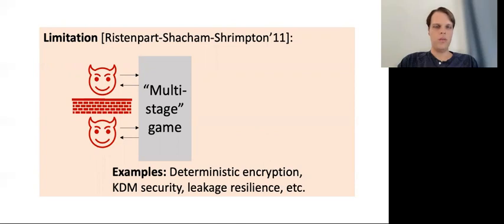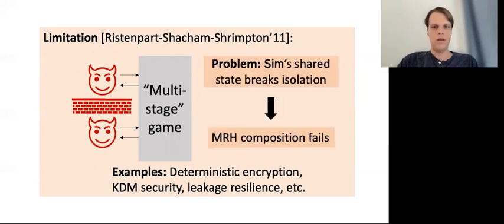Multi-stage games are games where there are two or more different adversaries, each interacting with the challenger. Importantly, the adversaries are not allowed arbitrary communication between them — maybe they're fully isolated or perhaps minimal communication is allowed. Examples of games that are multi-stage include deterministic encryption, key-dependent message security, leakage resilience, and others. As Ristenpart et al. observed, the fact that the plain indifferentiability simulator is allowed state causes problems in the multi-stage setting. Basically, since both adversaries will query the same simulator and that simulator is keeping state between its queries, the state of the simulator breaks the isolation between the adversaries. And what this means is that the MRH composition theorem actually fails for multi-stage games.